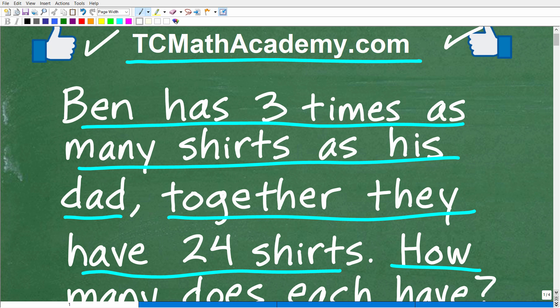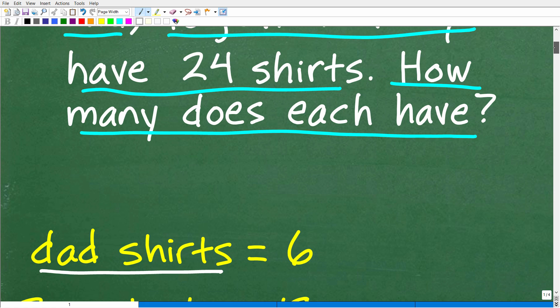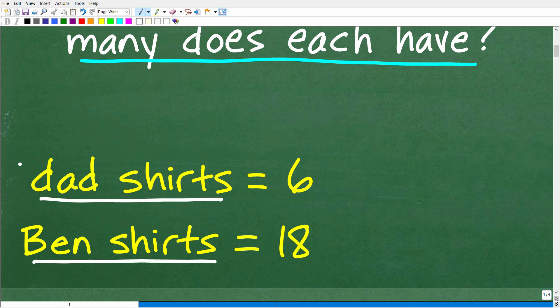Okay, so let's go and take a look at the answer here. So Ben has three times as many shirts as his dad. Together they have 24 shirts. How many shirts does each have? Well, the correct answer is the following. The dad has six shirts, and Ben has 18 shirts.